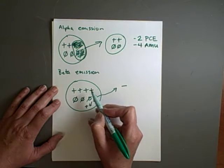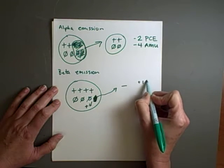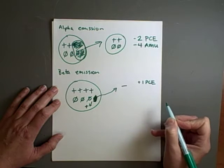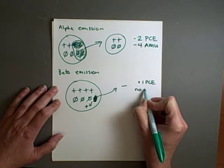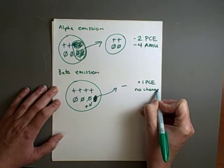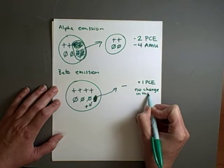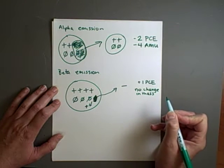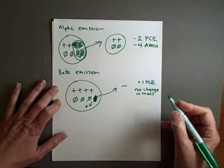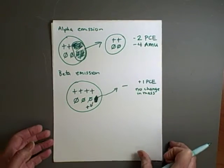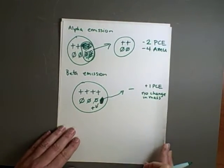One, two, three, four, five. I am plus one on the periodic chart of the elements. But no change in mass. Because if you remember, we ignore the mass of an electron because it takes 2,000 electrons to equal one proton.